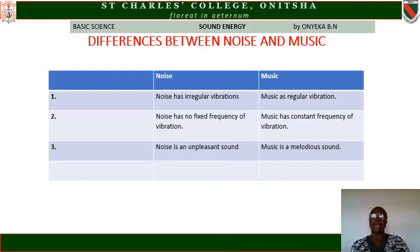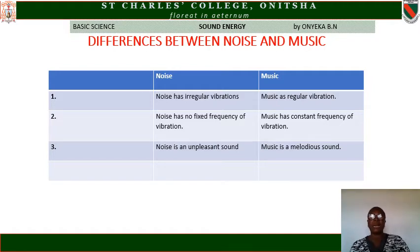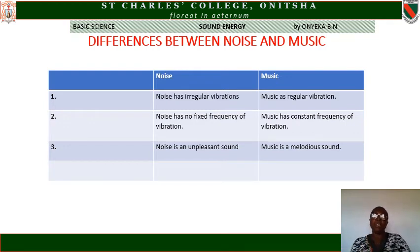Differences between noise and music: one, noise has irregular vibration while music has regular vibration; two, noise has no constant frequency of vibration while music has constant frequency of vibration; three, noise is an unpleasant sound while music is a melodious sound. That is why we have music that can lull someone to sleep, or music that can make a crying child stop crying — if you are singing, the child will enjoy hearing the tune of the music and keep quiet.